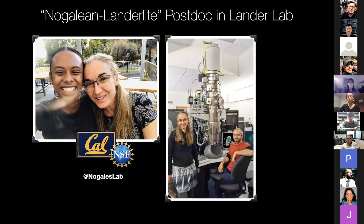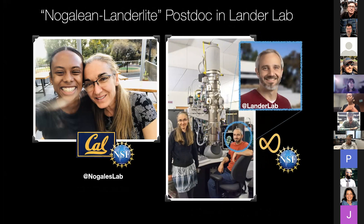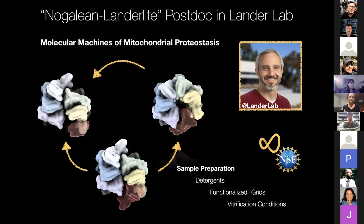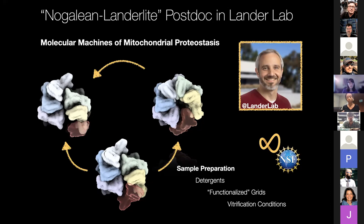I had the chance to work directly with one of Eva's favorite postdocs, Gabe Lander, whom she trained personally and raved about. I was so honored to do my postdoc with Gabe himself. Here with Gabe, I am focused on molecular machines — specifically intermitochondrial membrane proteins that play an important role in mitochondrial proteostasis. Sample preparation for us is critical: what detergents we use, what type of functionalized grids we apply, and our vitrification conditions are essential for visualizing highly dynamic and often heterogeneous samples.